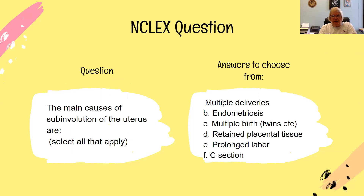The NCLEX question for this week is: the main causes of subinvolution of the uterus are — select all that apply. The answer choices are: multiple deliveries, endometritis, multiple birth, retained placental tissue, prolonged labor, and a C-section.